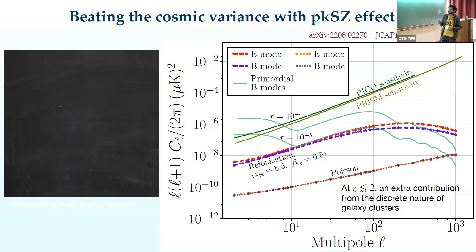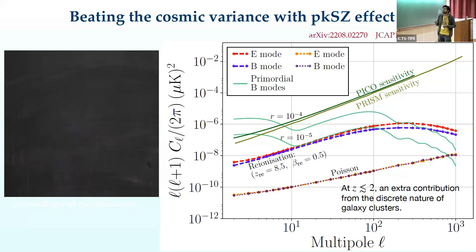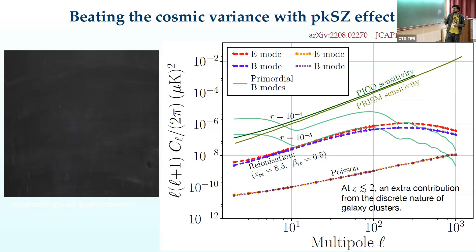This is a plot of the power spectrum of the polarization signal. In red you can see the E-modes and in blue the B-modes, for a symmetric homogeneous model of reionization given by a central redshift of 8.5 and a width characterized by the beta parameter. We get both E and B modes because the signal is quadratic in the velocity field. For reference I have also plotted the PICO and PRISM sensitivity curves to gauge the amplitude.